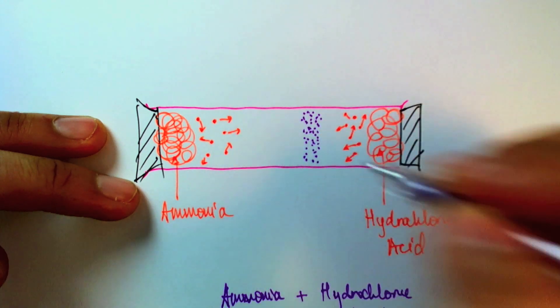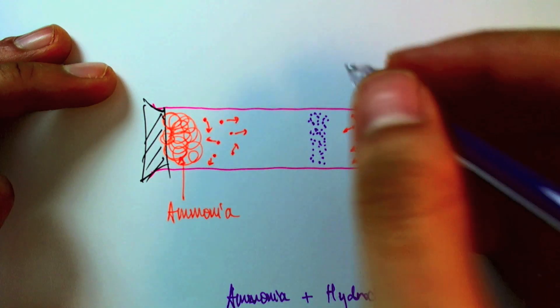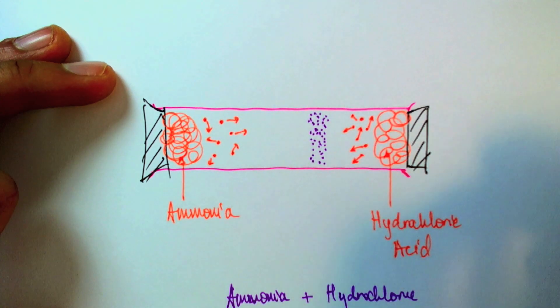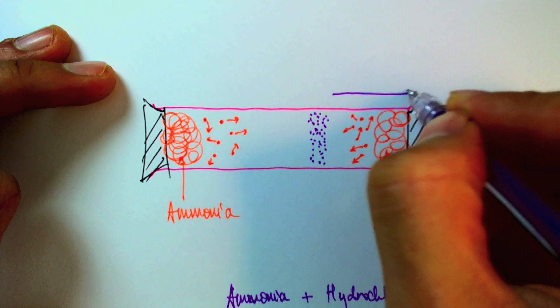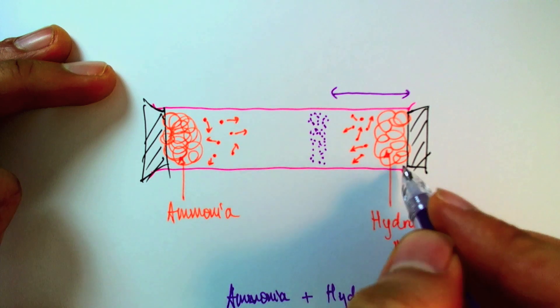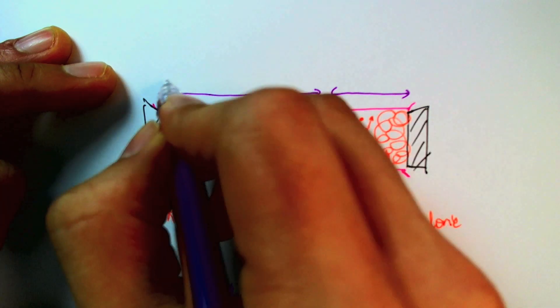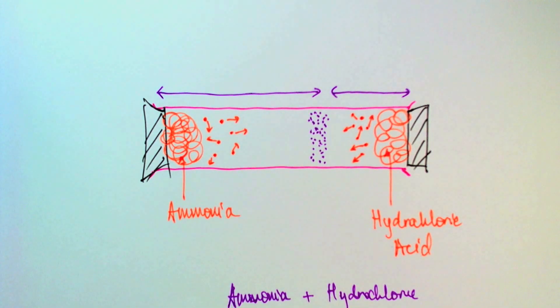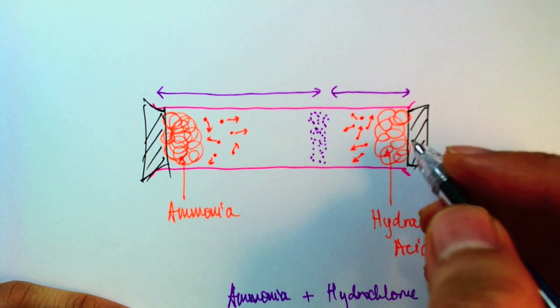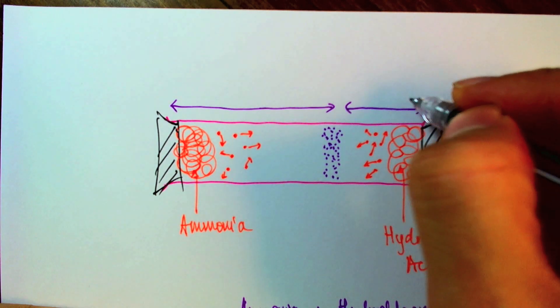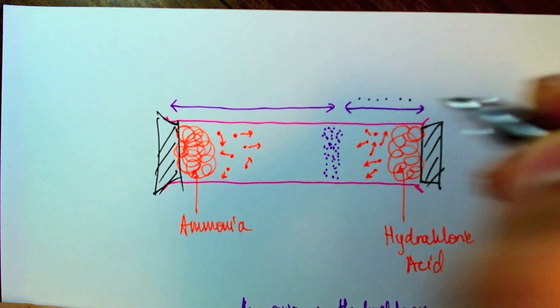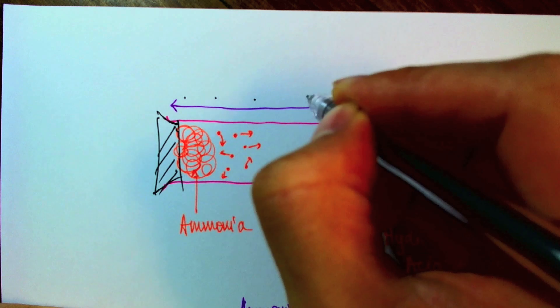Now, if you were to do this experiment, you'll find that this white cloud of ammonium chloride forms closer to the hydrochloric acid end of the test tube than the ammonia end of the test tube. One conclusion that we can draw from this is that the hydrochloric acid molecules moved more slowly because they move more slowly than the ammonia molecules.